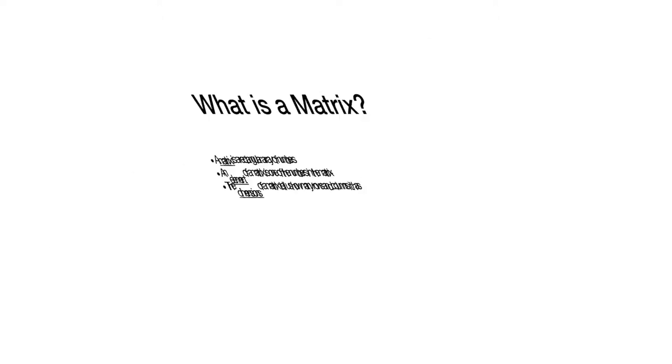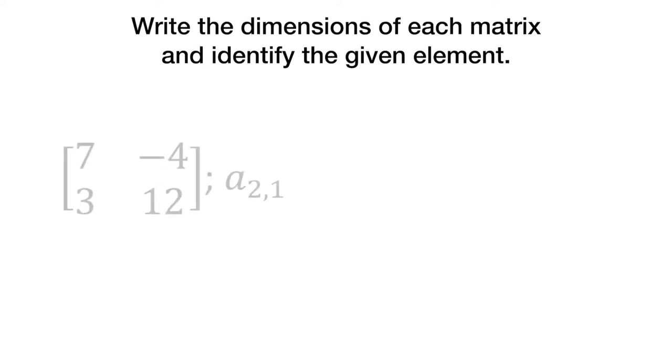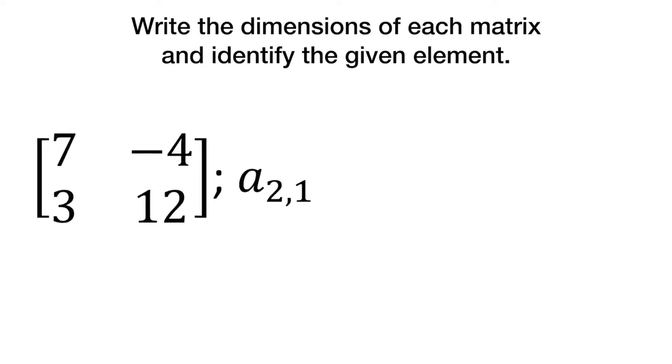So we're now going to try this out. We are going to write the dimensions of each matrix and identify the given element. So here's our first matrix: 7, negative 4, 3, and 12. Now, as I said, a matrix is made up of rows and columns. So in this case, there are two rows and two columns. So this is a 2 by 2 matrix.